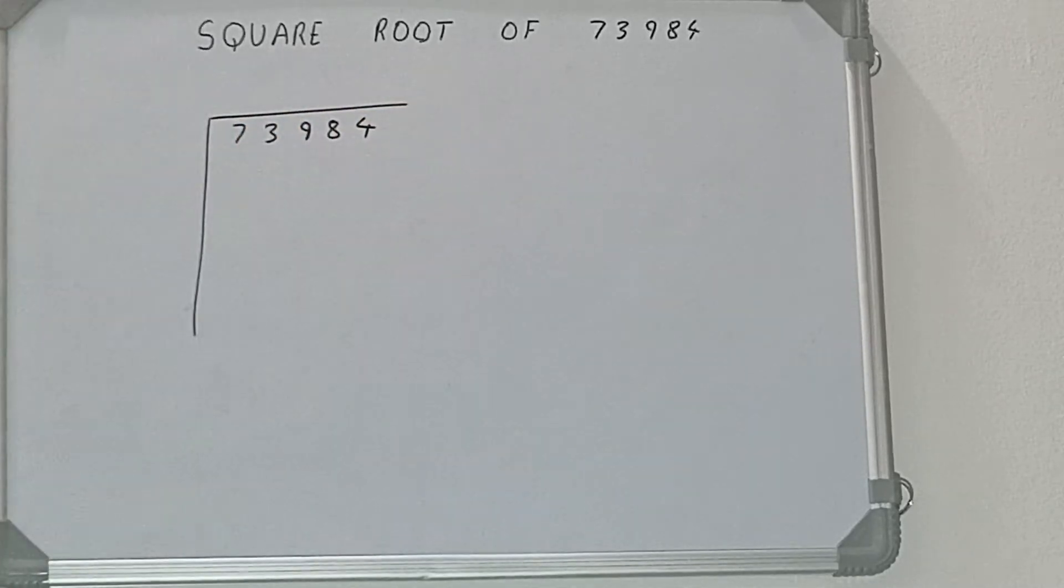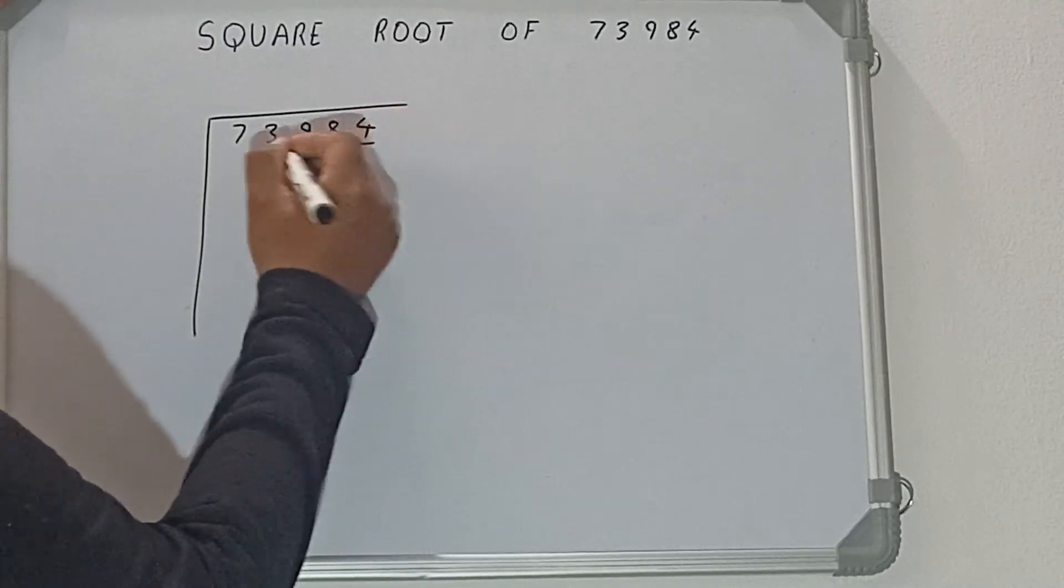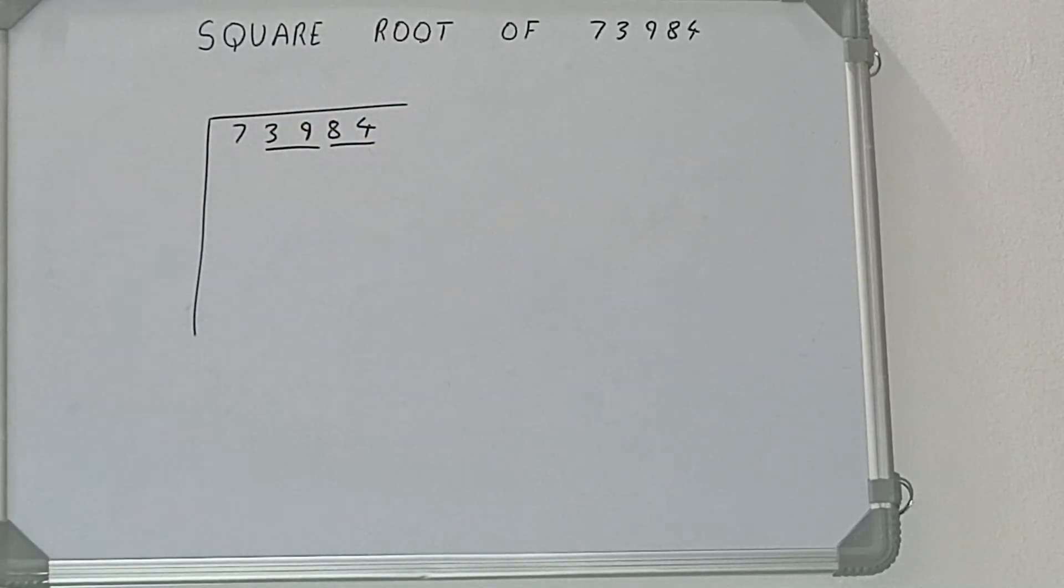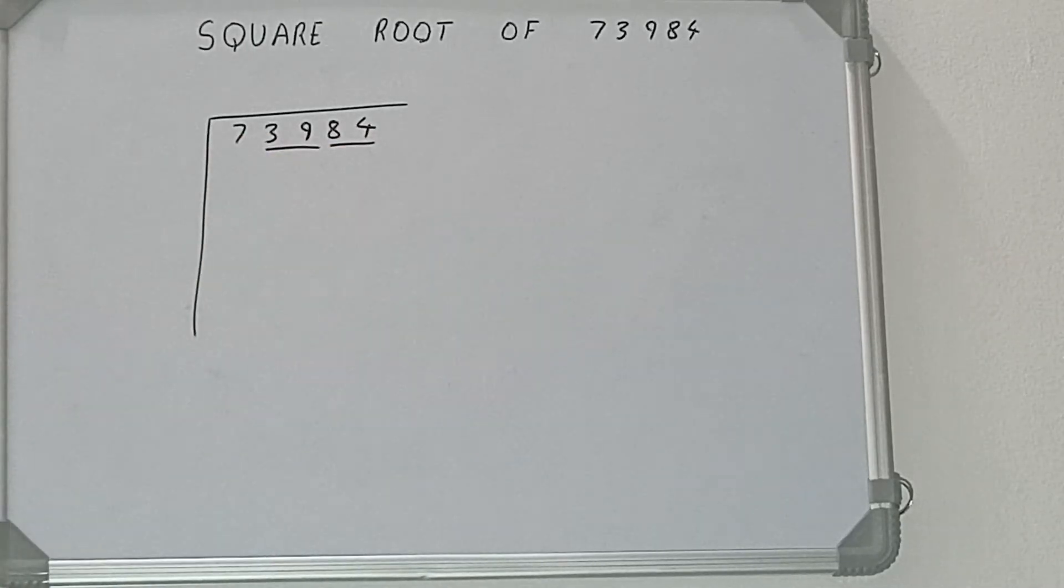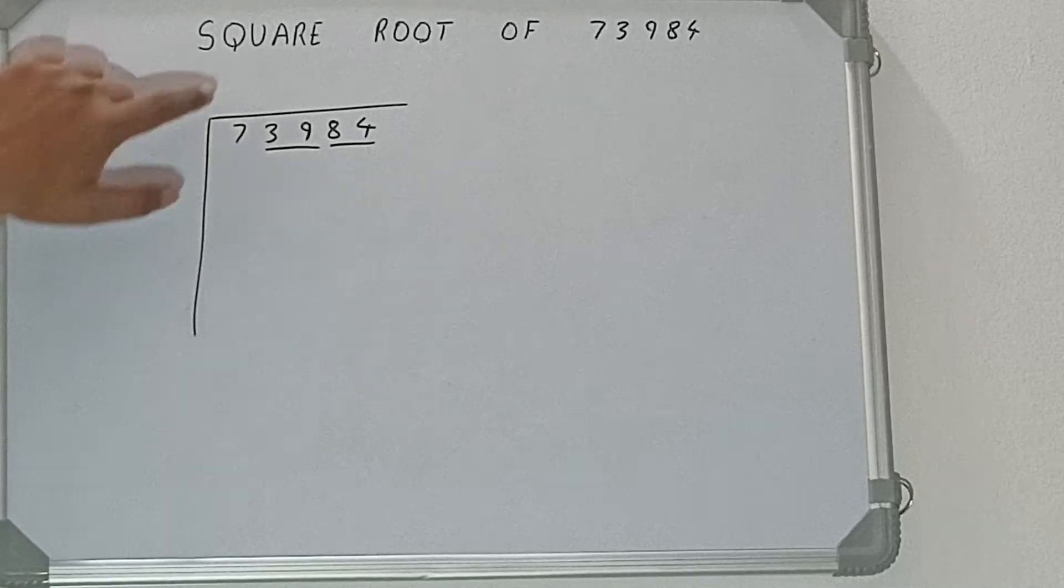Next thing we need to do is form pairs from the right hand side. So one pair will be 84, one pair will be 39, and this 7 will be left out. So first we'll divide this 7 and then we'll bring down the pairs. The rule is whatever number we write here we need to write here also.